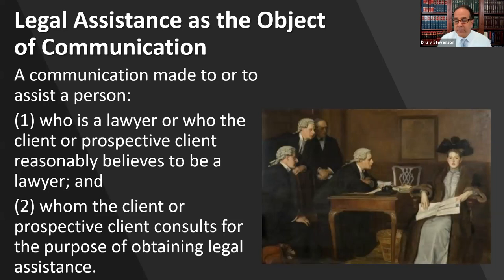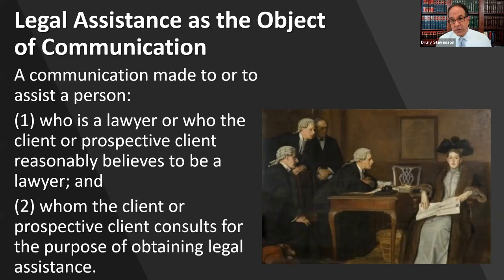Now let's talk about our fourth element: legal assistance must be the object of the communication. The communication must be made to assist a person who was a lawyer, or whom the client or prospective client reasonably believes to be a lawyer. So privilege will still apply even if your client doesn't know your license was suspended — if it's reasonable for them to think you're a lawyer and they tell you something hoping to get legal advice, it will still be privileged.